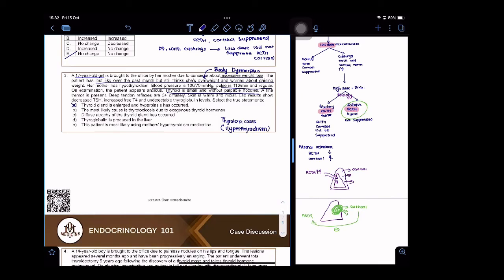Okay, this is a case of hyperthyroidism, but because of these symptoms - increased blood pressure, increased pulse, patient appears anxious - this is more of a thyroid toxicosis diagnosis. You call it thyroid toxicosis. A fine tremor is present, deep tendon reflexes are three plus diffusely.